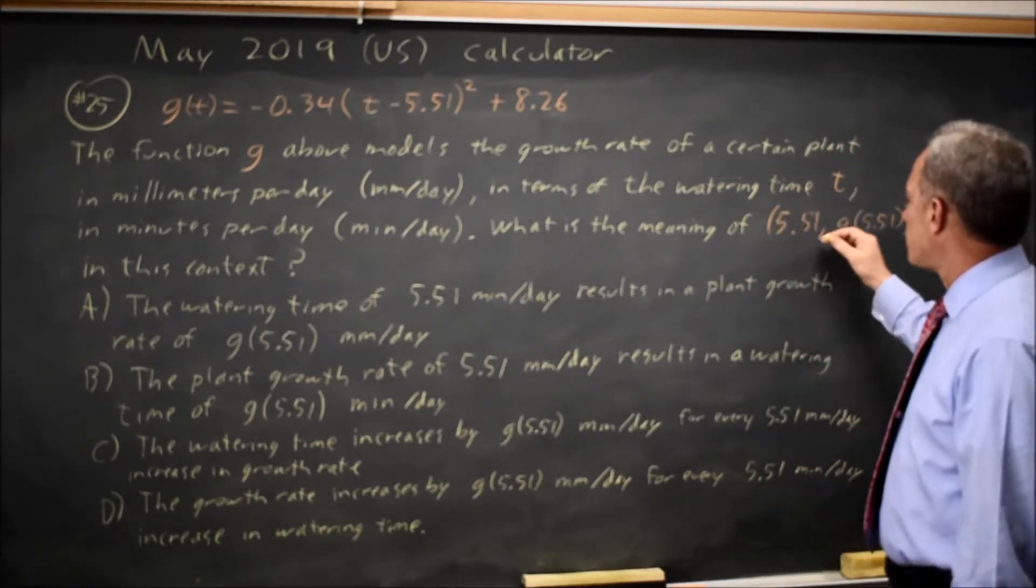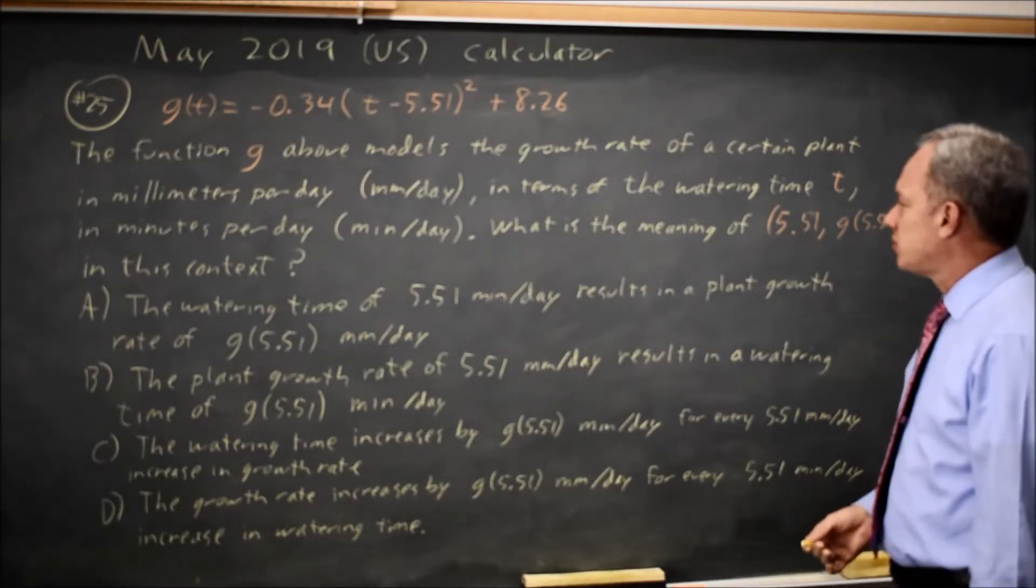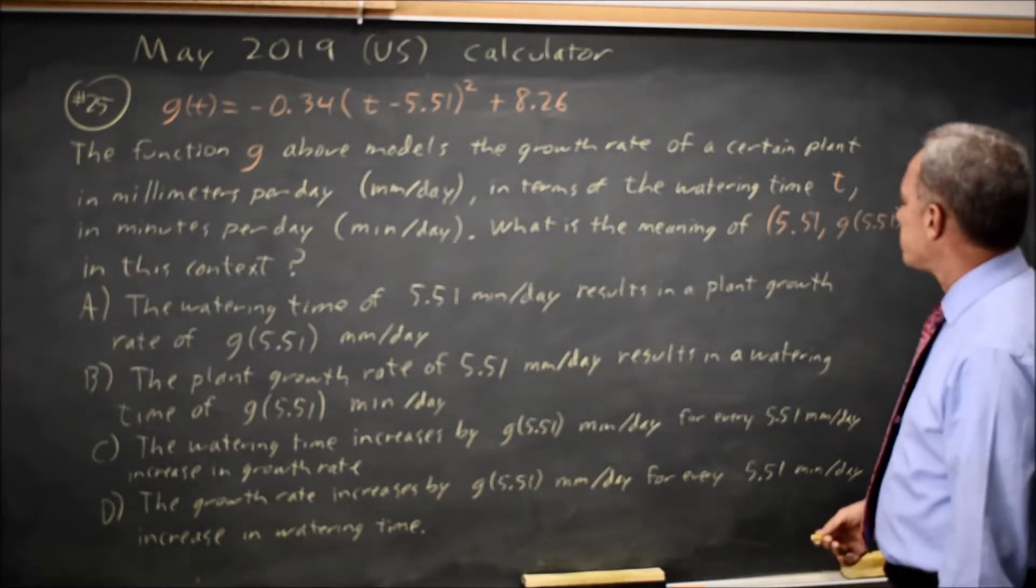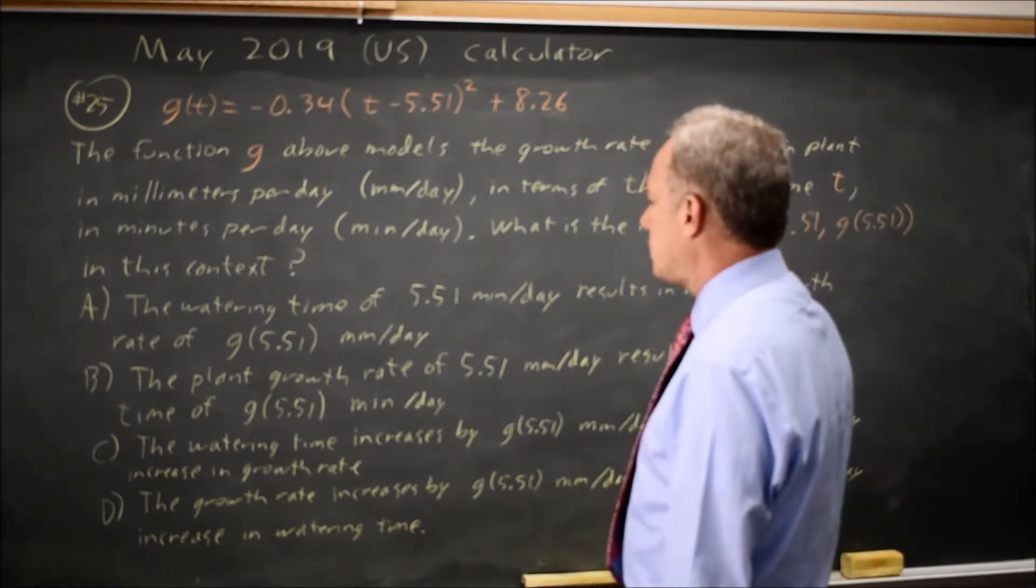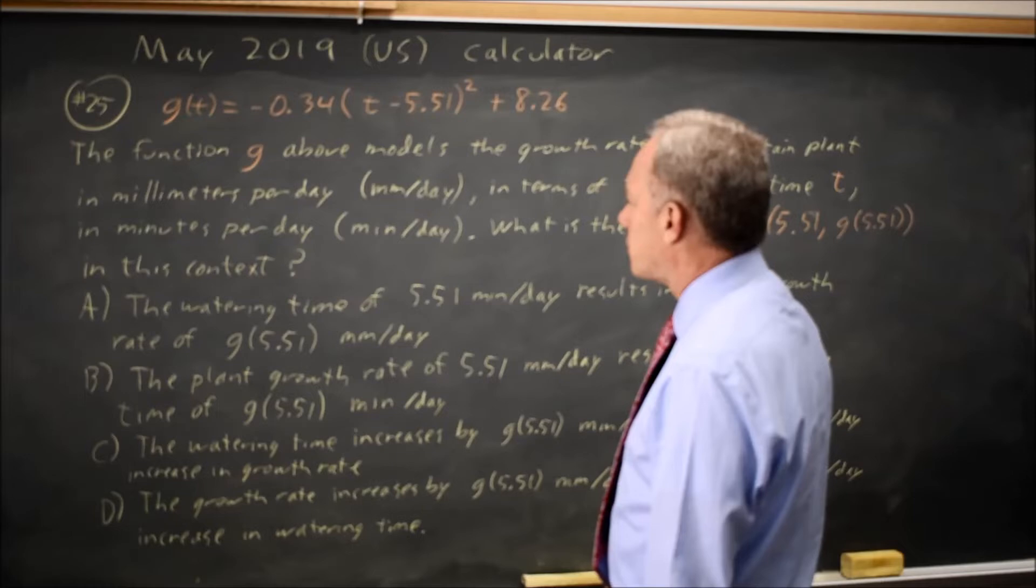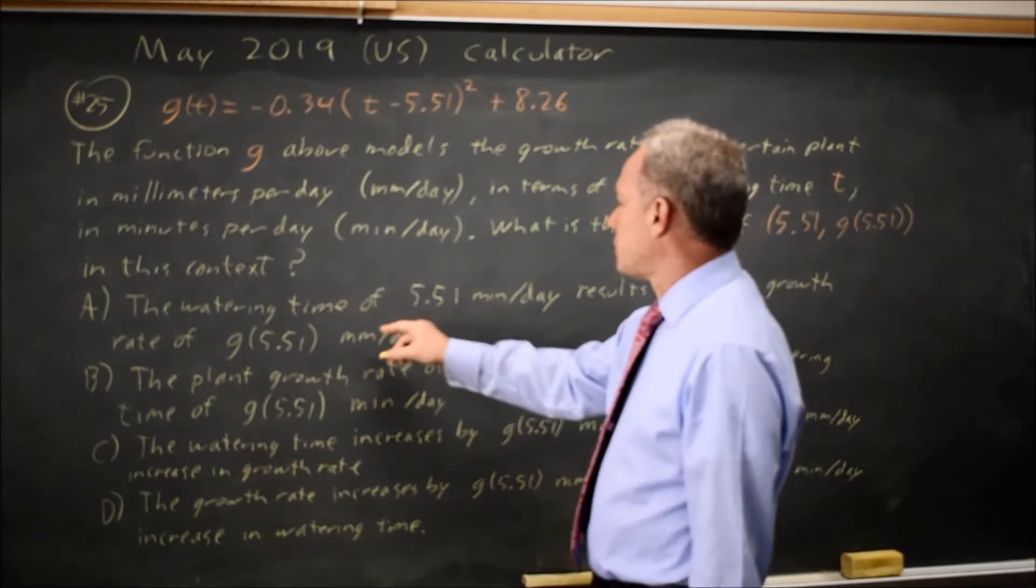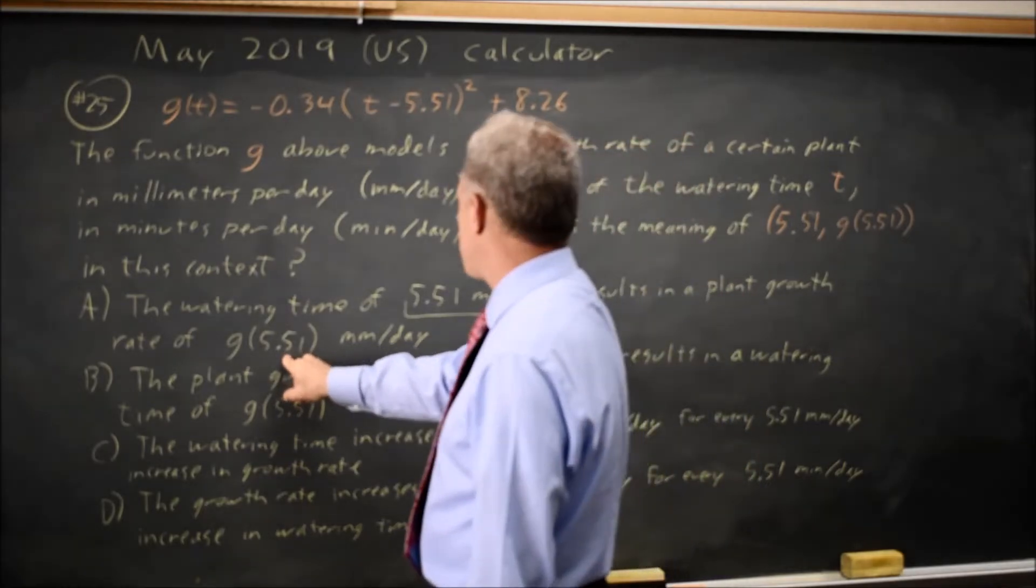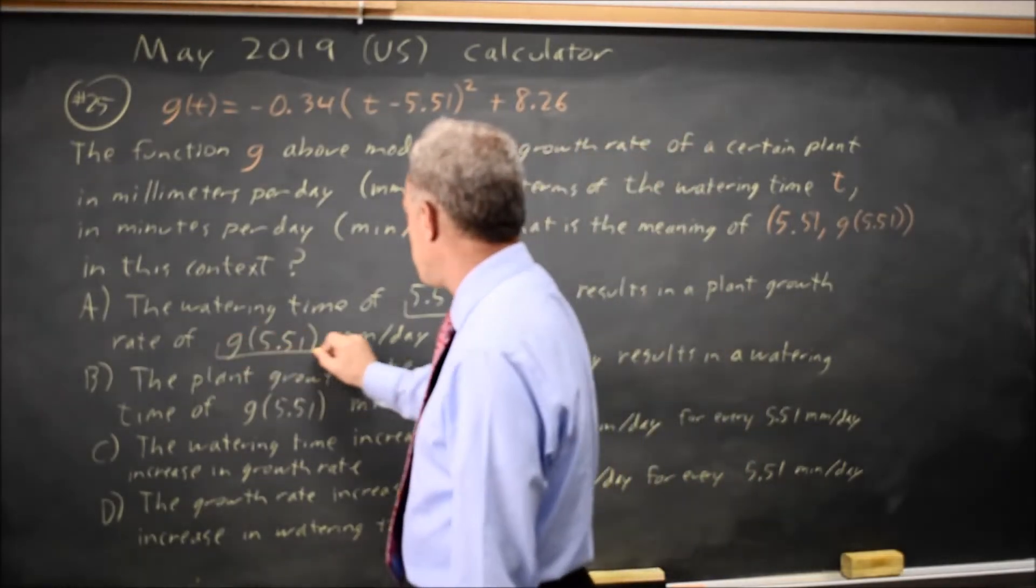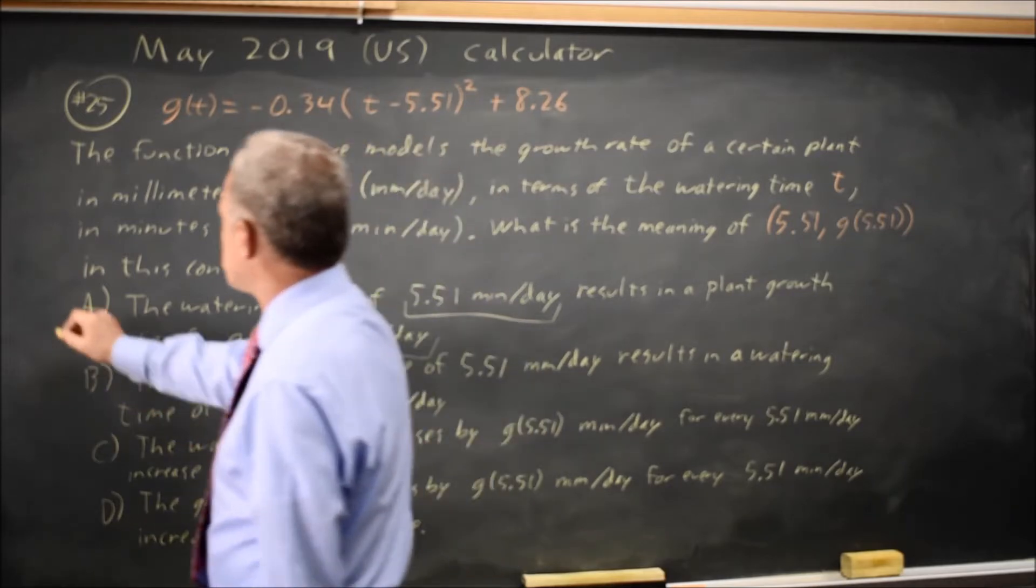The vertex is at t equals 5.51, g of 5.51. Since our t value is 5.51, where t is watering time in minutes per day, a watering time of 5.51 minutes per day results in a plant growth rate of g of 5.51 millimeters per day. So choice A looks correct.